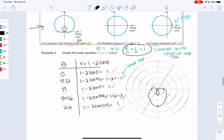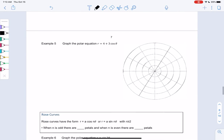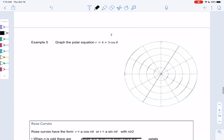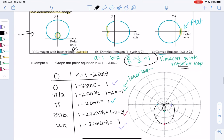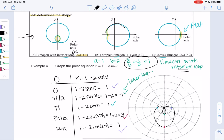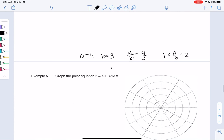Let's do one more limaçon. So we have example five, graph the polar equation r equals four plus three cosine theta. So a is four, b is three. So a over b is four thirds. This is my in-between one and two case. So you can look back up. And we'll get a dimple. So again, it could be this shape in any direction. So we'll plot a couple points, but we'll get a dimpled limaçon.